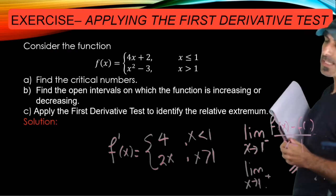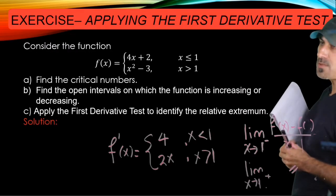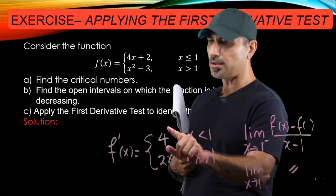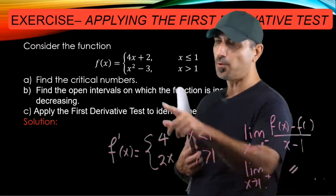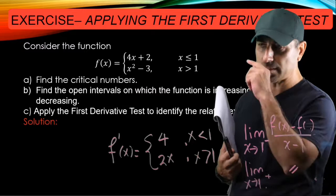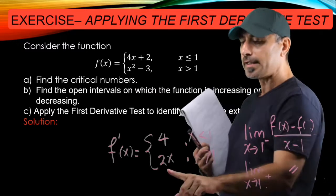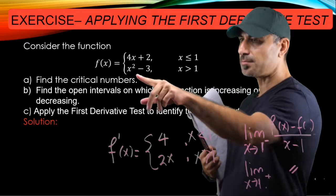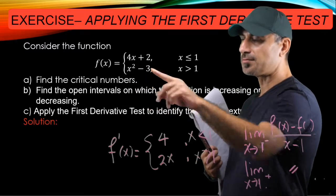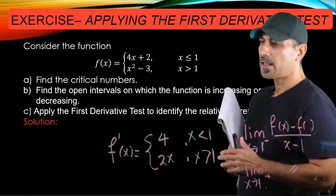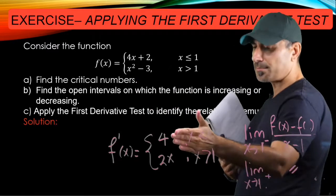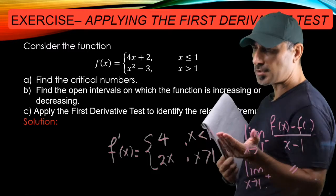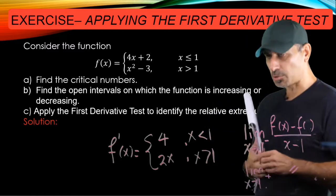To check the differentiability at point one, we can differentiate each piece of f prime. The derivative of the left piece is four, which is constant. And the right piece of f prime is 2x, which is the derivative of x squared minus three. So f prime is nice whenever x is not equal to one.